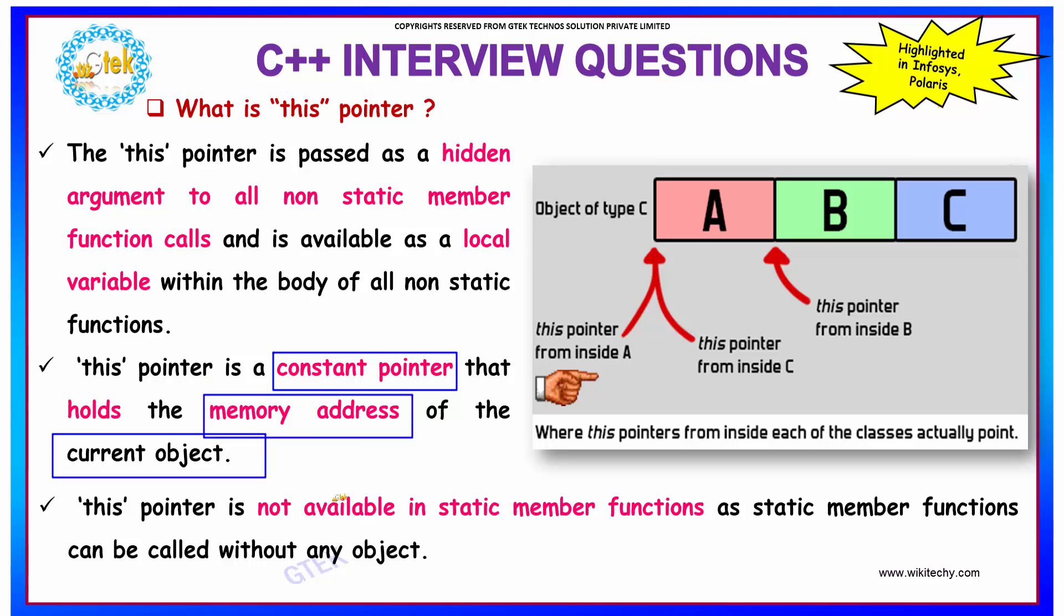This pointer is not available in static member functions as static member functions can be called without any object. Hence, this pointer is used for accessing the values which it is pointing to within the function or the body of all non-static functions.